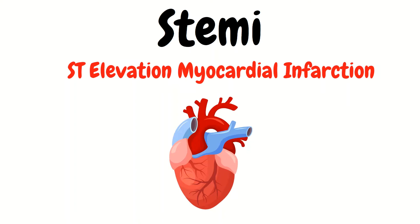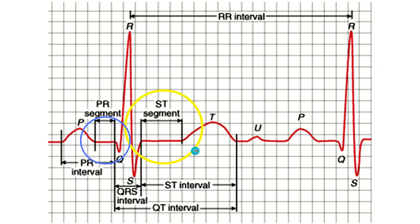First we need to know what the ST segment is, since STEMI stands for ST segment elevation myocardial infarction. The ST segment is the section encircled in yellow on screen. Note how it is similar to the PR segment in that it's kind of just a straight line. This is the ST segment, and this is the PR segment. It's important to know where the PR segment is because we're going to compare them when looking for ST segment elevation — the ST will be elevated above the PR segment.